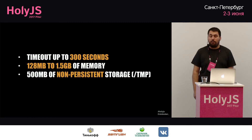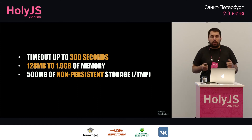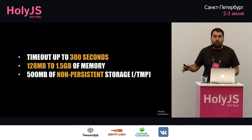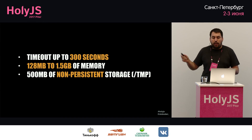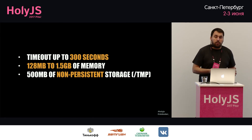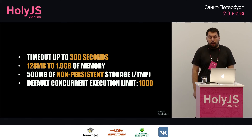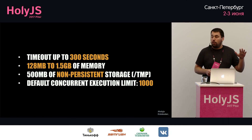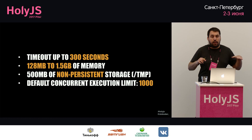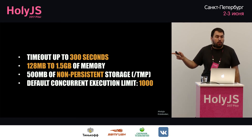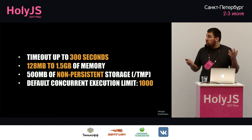The 500 MB non-persistent storage sounds like a problem, but for microservices everything needs to be stateless anyway, so this enforces good practice. By default, you can have up to 1,000 Lambdas running simultaneously — so up to 1,000 concurrent requests — without doing anything. Amazon handles that automatically. If you need more, just email support and they'll increase the limit. You can build an API and as users start using it, it will just work.